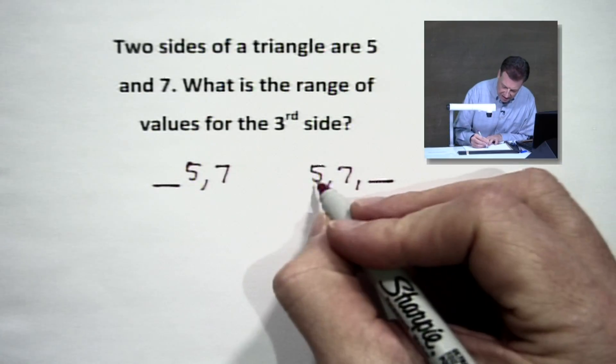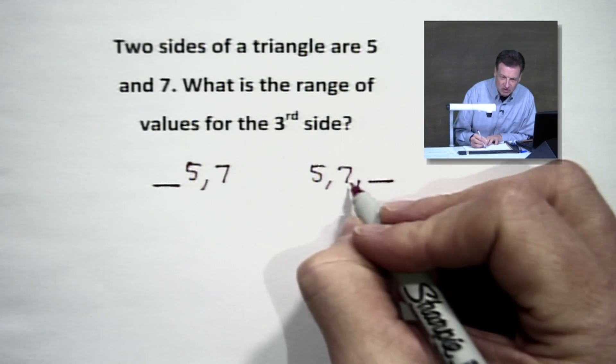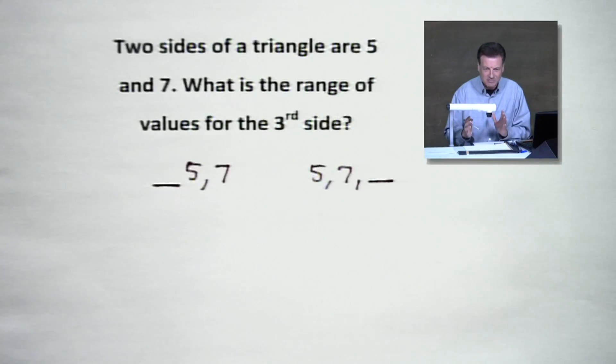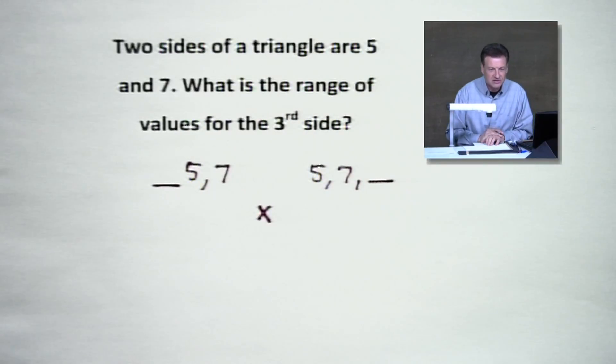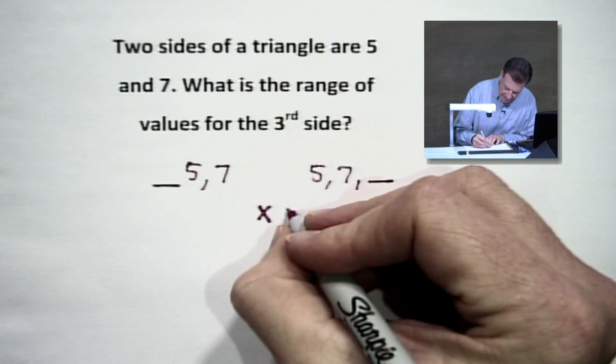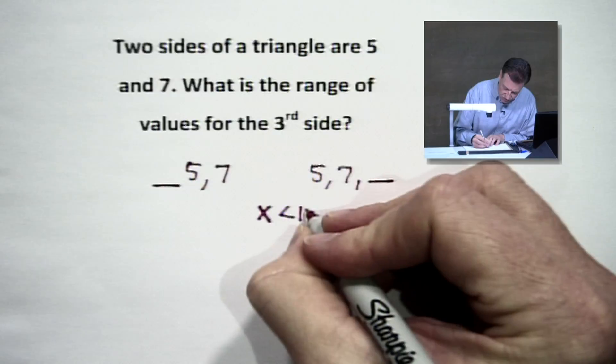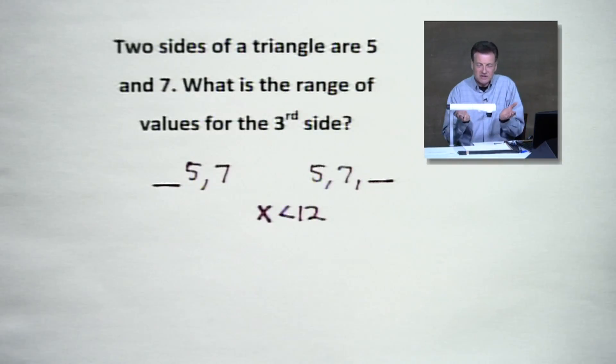All right. So, here's the deal. I said something about if we added five and seven, we were out of range because we would collapse. So, what we've got to do, we're going to find this third side. We're going to call it x. All right. Right there it is. And we're going to say it has to be smaller than 12. Now, how much smaller? It doesn't matter. Okay. Well, actually, it does.